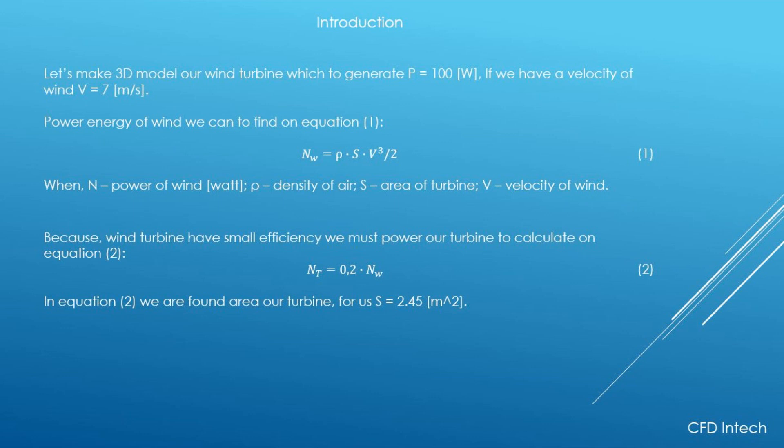The power energy of wind we can find using equation 1. Because a wind turbine has small efficiency, we must calculate the power of the turbine using equation 2. In equation 2, we find the area of the turbine — for us, the area equals 2.45.